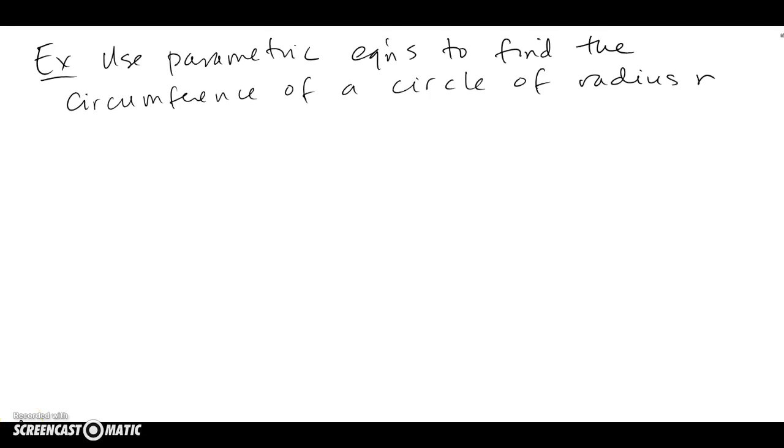Okay, let's revisit the circumference problem. It says use parametric equations to find the circumference of a circle of radius r, so we have to figure out in parametric form what a circle of radius r will look like.